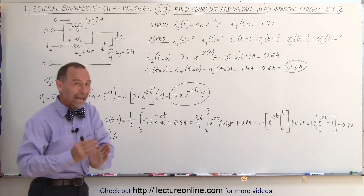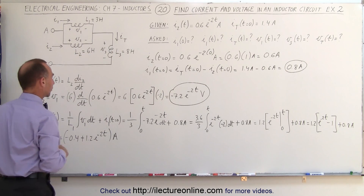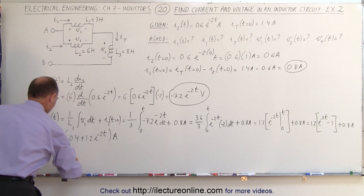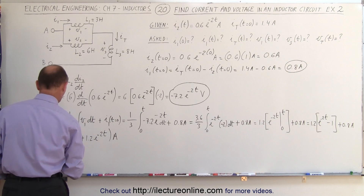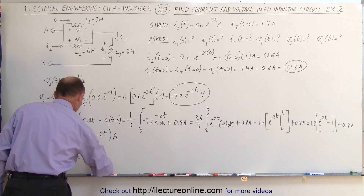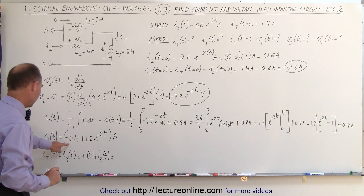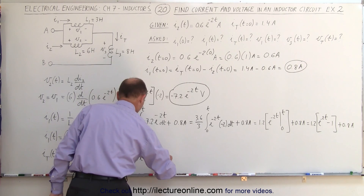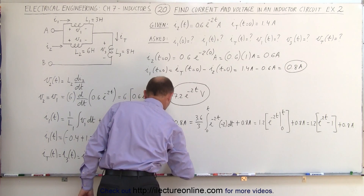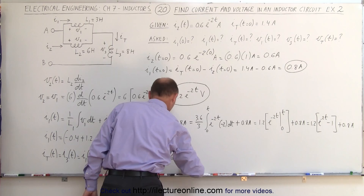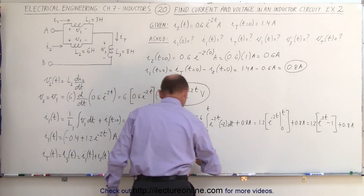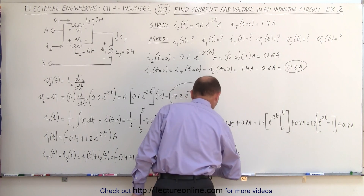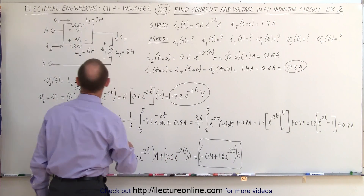Now we have i₁(t) and i₂(t). Adding them together gives the total current, which is also the current through inductor 3. i_total(t) = i₃(t) = i₁(t) + i₂(t) = (minus 0.4 + 1.2e^(-2t)) + 0.6e^(-2t) = minus 0.4 + 1.8e^(-2t) amps. That's the total current in the circuit and the current through inductor 3.